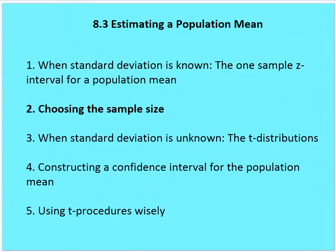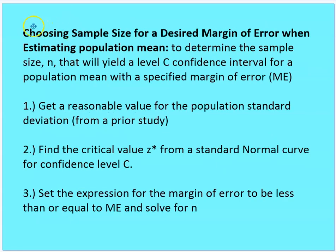Choosing a sample size — now we're going to solve for n using that same formula. We choose a sample size for a desired margin of error when estimating a population mean. To determine the sample size n that will yield a level C confidence interval with a specified margin of error, we first get a reasonable value for the population standard deviation from a prior study, find a critical value based on the confidence level, set up the expression for the margin of error to be less than or equal to the desired margin of error, and then solve for n.